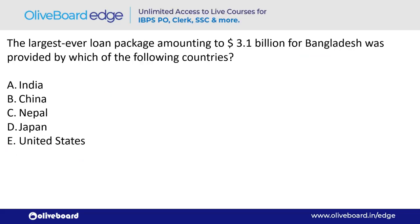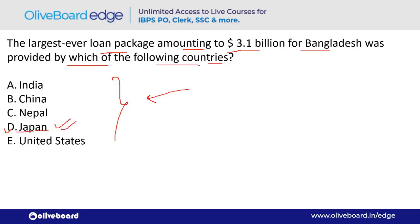The largest-ever loan package amounting to $3.1 billion for Bangladesh was provided by which country? The answer is Japan — option D. Bangladesh's capital is Dhaka, and its currency is Taka.